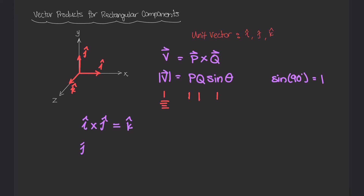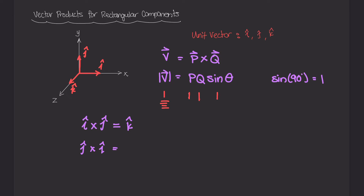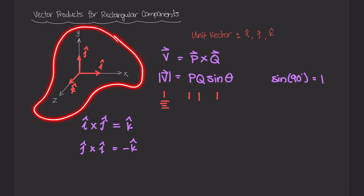What if we did j cross i? The magnitude is still 1, but using the right-hand rule — laying your four fingers along j and curling them towards i — your thumb points into the page, going the opposite direction of z. So j cross i equals negative k.